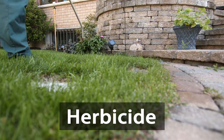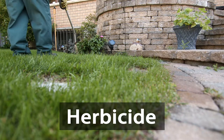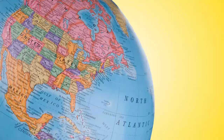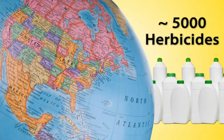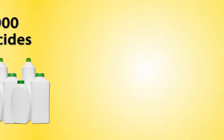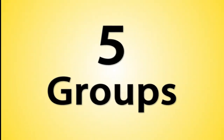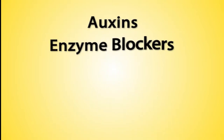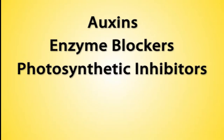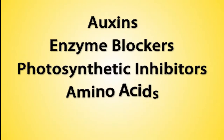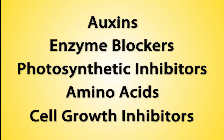Herbicides are pesticides used to control or kill unwanted plants. There are close to 5,000 herbicides registered for use in the United States, all with various modes of action and formulations. In this video, we will cover five groups of herbicides: auxins, enzyme blockers, photosynthetic inhibitors, amino acids, and cell growth inhibitors.